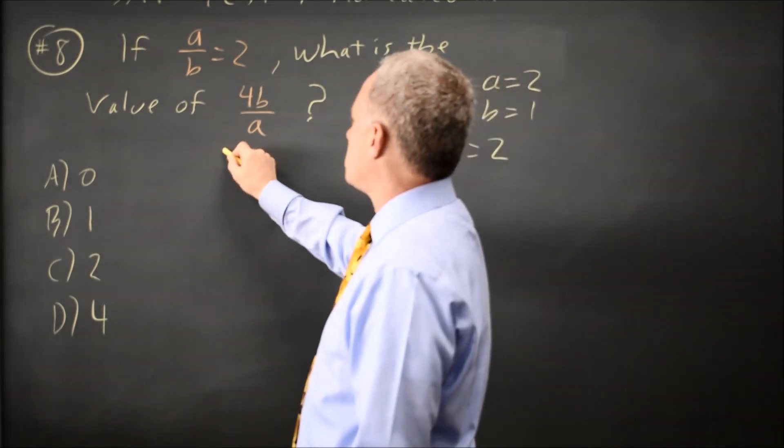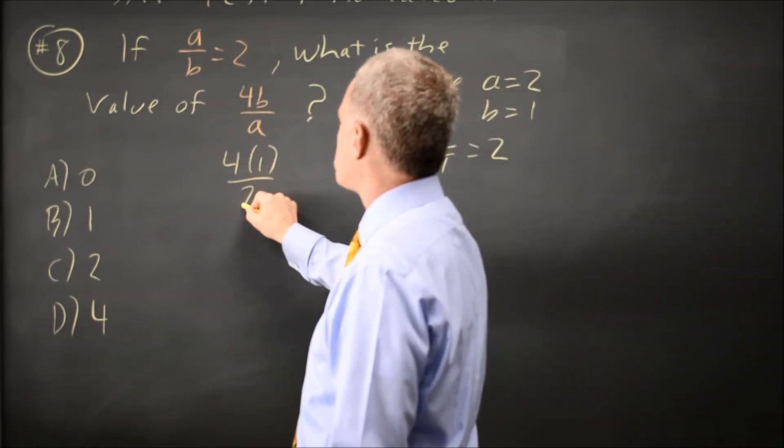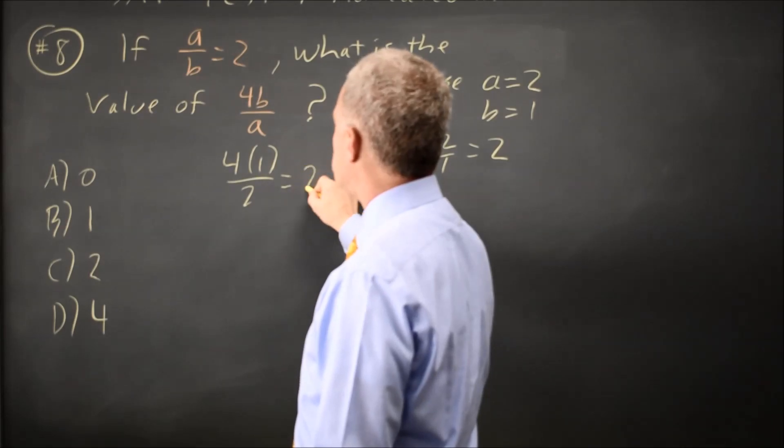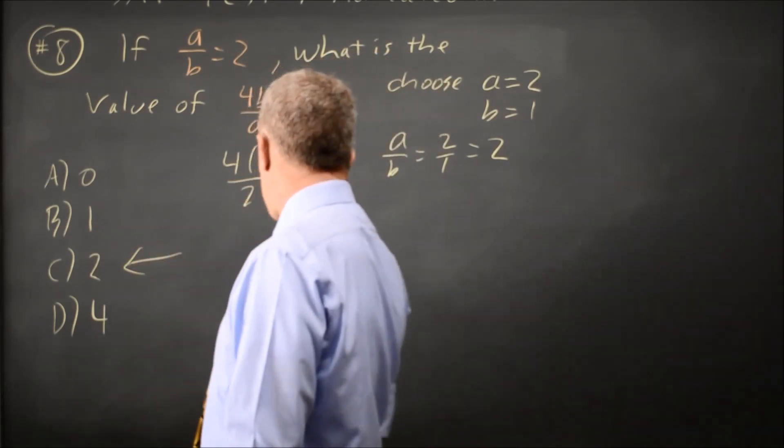With those values, four B over A is four times one over two, which is four over two is two. The answer would be choice C.